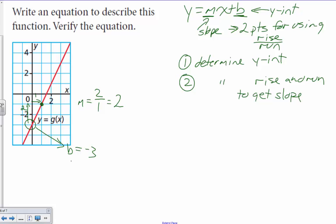Now we have m and we have b. Substitute m and b into y equals mx plus b. So we get y equals 2x minus 3 and you're done. That's it.